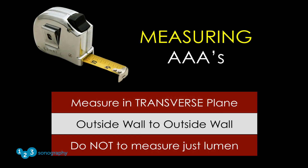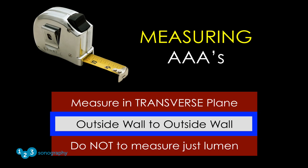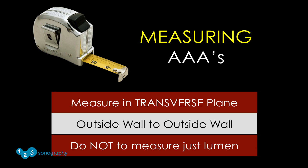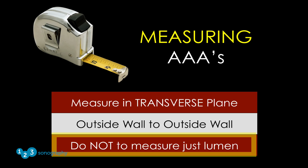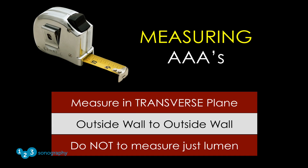When measuring the abdominal aorta to determine the presence and extent of an aneurysm, it is important to recall that the measurement must be from one outside wall of the aneurysm to the other outside wall. This is a common pitfall for novices who only measure the internal lumen because it's easier to see. When in doubt, make liberal measurements initially and then confirm with a more definitive study such as CT.